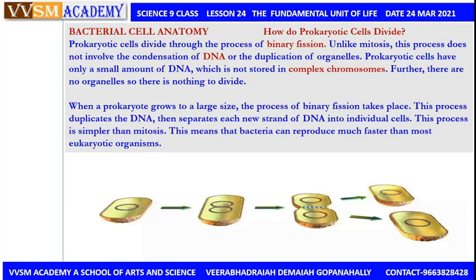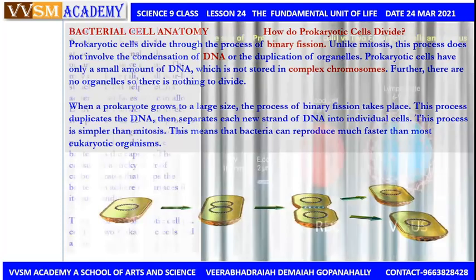The DNA is not stored in complex chromosomes, and there are no organelles to divide. Therefore, when a prokaryotic cell grows to a large size, binary fission takes place — duplicating the DNA, then separating each new strand into individual cells. This process is simpler than mitosis, meaning bacteria can reproduce much faster than most eukaryotic organisms.